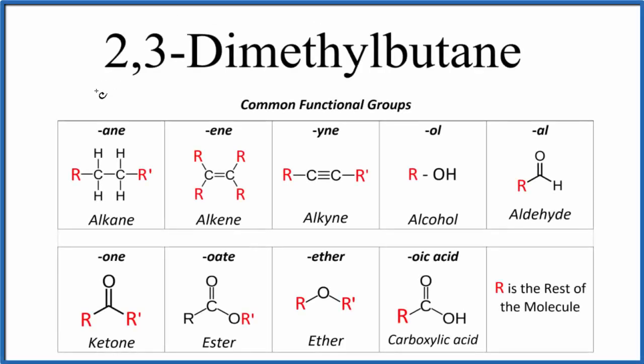Let's draw the molecular structure for 2,3-dimethylbutane. The first thing we notice is it ends in -ane. When it ends in -ane, we're talking about an alkane, so we're going to have all carbons and hydrogens attached with single bonds.